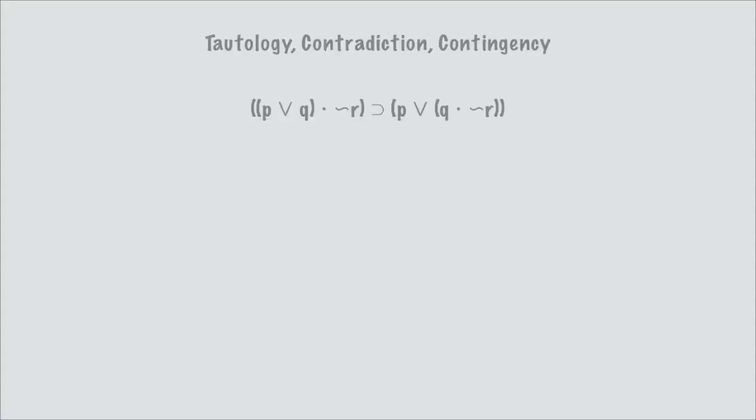Here we have an example of a tautology, contradiction, or contingency problem. The question is: is this statement a tautology, a contradiction, or a contingency? We have p, q, and r — three distinct letters — which means we're going to have eight rows.